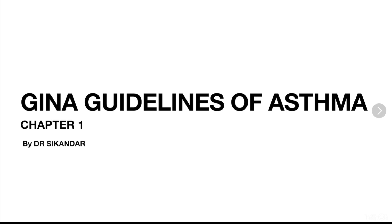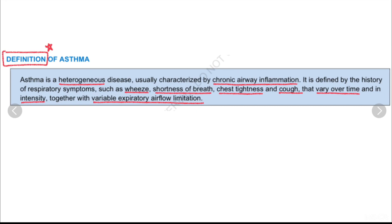Chapter 1. So what is the definition of asthma? Asthma is a heterogeneous disease usually characterized by chronic airway inflammation. It means there could be environmental factors or genetic factors that can lead to asthma, and it is defined by a history of four respiratory symptoms.